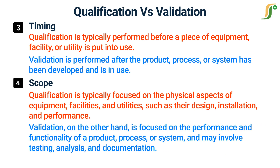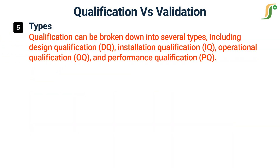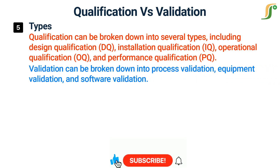Validation, on the other hand, is focused on the performance and functionality of a product, process, or system, and may involve testing, analysis, and documentation. Qualification can be broken down into several types, including design qualification, installation qualification, operational qualification, and performance qualification. Validation can be broken down into process validation, equipment validation, and software validation.